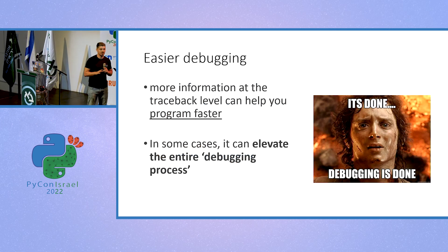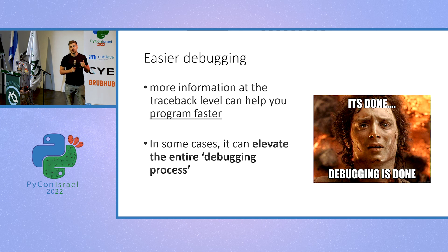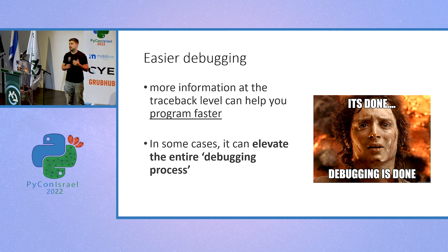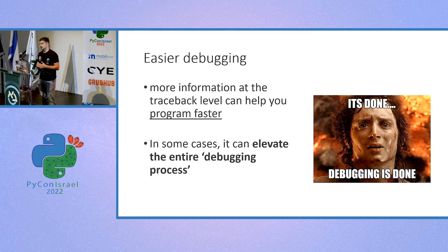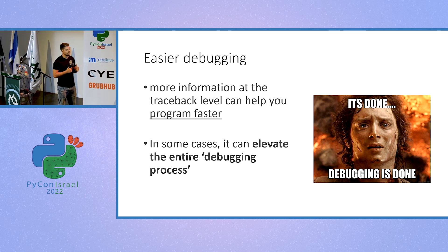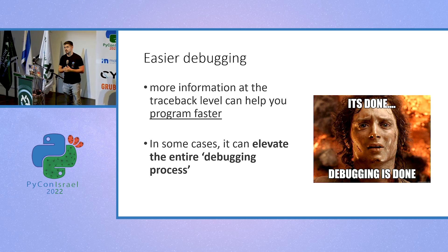To sum it up: the point of this feature, the motivation behind it, is to help us debug faster. Because debugging is an essential part of coding, it basically helps us code faster. We don't have to open the debugger every time we have a bug. If it's a simple enough bug we can debug it ourselves, and with extra information, more bugs become simple enough to debug without checking logs, breaking lines into multiple lines, or opening the debugger.